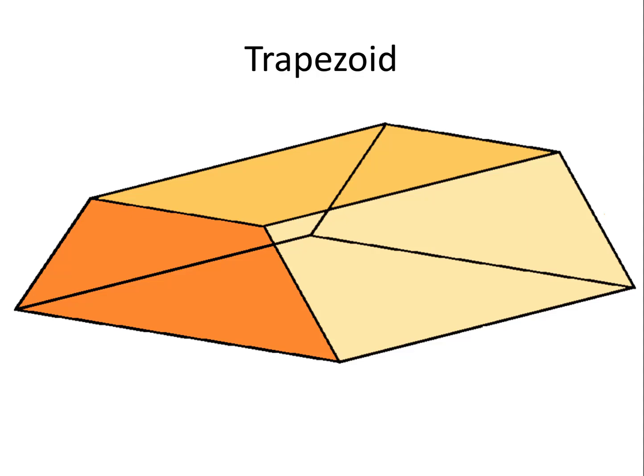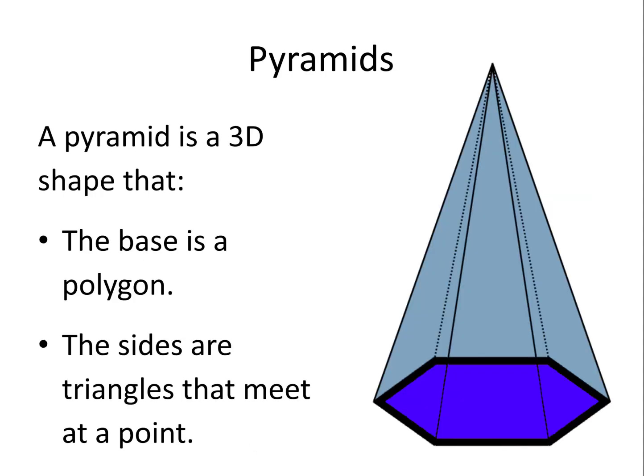A trapezium-based prism can also be called a trapezoid. A pyramid is a 3D shape where the base is a polygon and the sides are triangles that meet at a point.